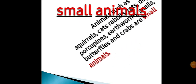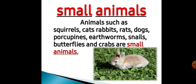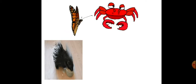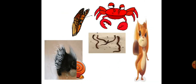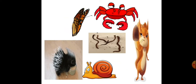Small animals: Animals such as squirrels, cats, rabbits, rats, dogs, porcupines, earthworms, snails, butterflies and crabs are small animals. Yeh jo sara animals hain, woh small animals hain. This is the picture of rabbit, butterfly, crab, porcupine, snail, earthworm and squirrel. These are the small animals.